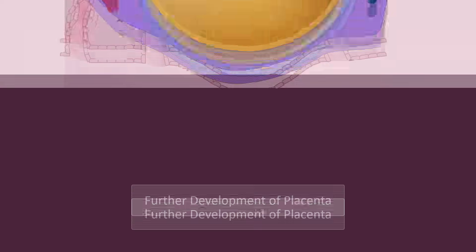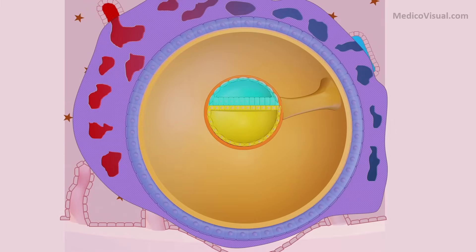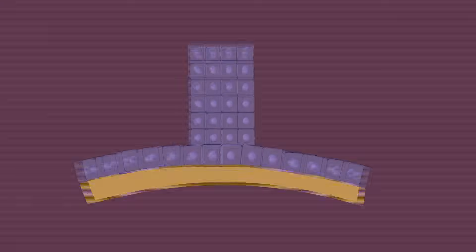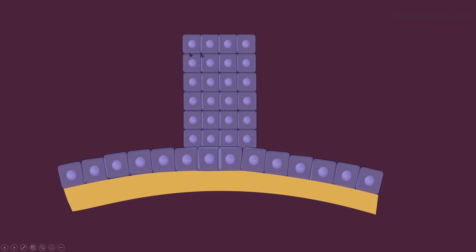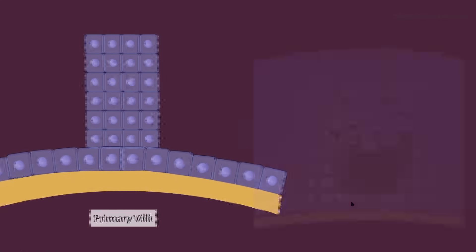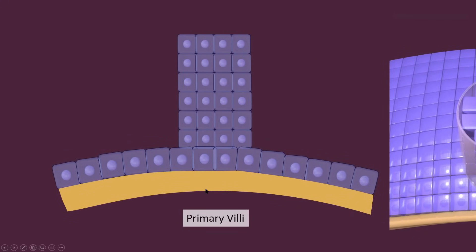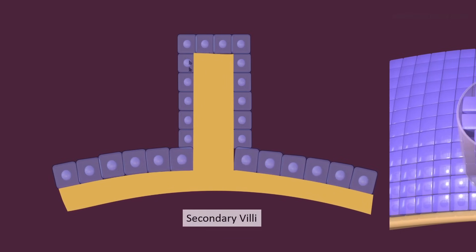Now let's see further development of placenta. Near the end of the second week, finger-like processes called primary villi arise from the cytotrophoblast and penetrate into the syncytiotrophoblast. Zooming into one primary villus, it consists of a finger-like projection of cytotrophoblast along with the extra-embryonic somatopleuric mesoderm. During the third week of development, the underlying extra-embryonic somatopleuric mesoderm sends its extension into the core of this primary villus, forming a mesenchymal core — at which point the primary villus is converted to a secondary villus.